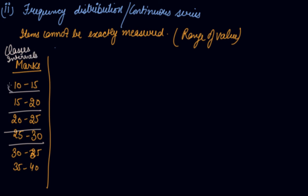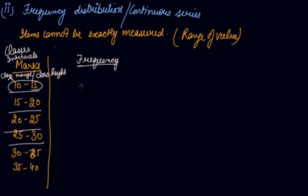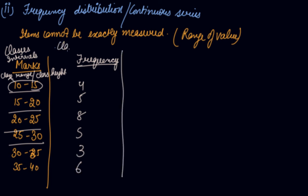The difference between the class limits — here it is 5 — is known as the class range or class height. The frequency tells us how many students fall under each class. For example: 4, 5, 8, 5, 3, 6 students respectively. This is called the class frequency.